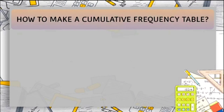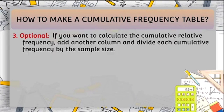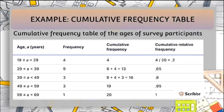Next is how to make a cumulative frequency table. First, create an ungrouped or grouped frequency table for an ordinal or quantitative variable. Cumulative frequencies don't make sense for nominal variables because the values have no order — one value isn't more than or less than another. Second, add a third column to the table for the cumulative frequencies. The cumulative frequency is the number of observations less than or equal to a certain value or class interval. To calculate it, add each frequency to the frequencies in the previous row. Third (optional): add another column to divide each cumulative frequency by the sample size. Here we have an example of a cumulative frequency table — it is the same as the grouped frequency table, but we calculate the cumulative frequency and the cumulative relative frequency.